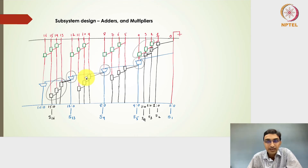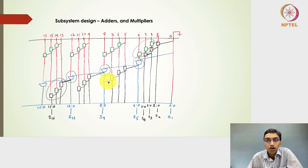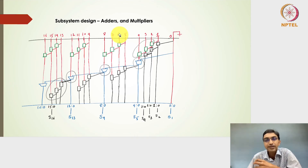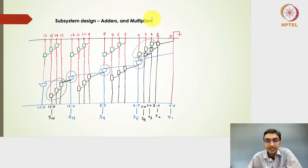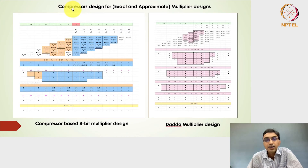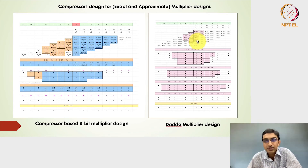Once we understand the one-bit full adder, the next module will be on adders and multiplier designs. The propagate-and-generate architecture for designing a 16-bit adder system will be examined closely, as it helps simplify adder subsystem designs. These adders will be useful in designing multipliers, which are a major arithmetic component in digital subsystems. Finally we will talk about compressor designs for multipliers, which are most frequently used to achieve the multiplier product output.